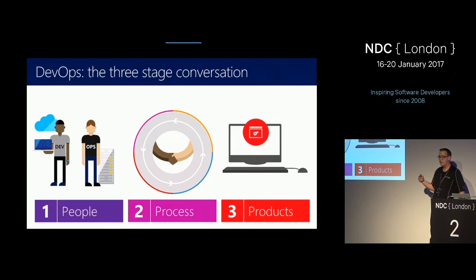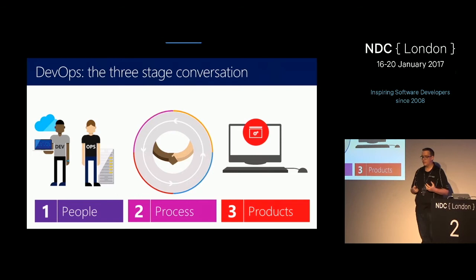How do we do DevOps? I want to go through the three areas — people, process, and products — and discuss how we approach each one. Products will be the biggest section. I'll also have a couple of demos where I show some stuff from the ALM Rangers and how things work, just to make sure that you get a real sense of what we do and hopefully can use it in your own projects.